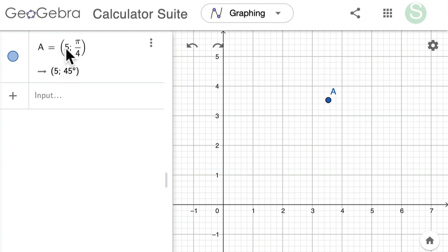And you can see that when you enter a point, you start with 5, that's a distance of 5 from the pole, and then just use a semicolon. And that tells GeoGebra the next thing you're going to enter is the amount that you're turning, which in this case is pi over 4, and I love that it also shows it in degrees.